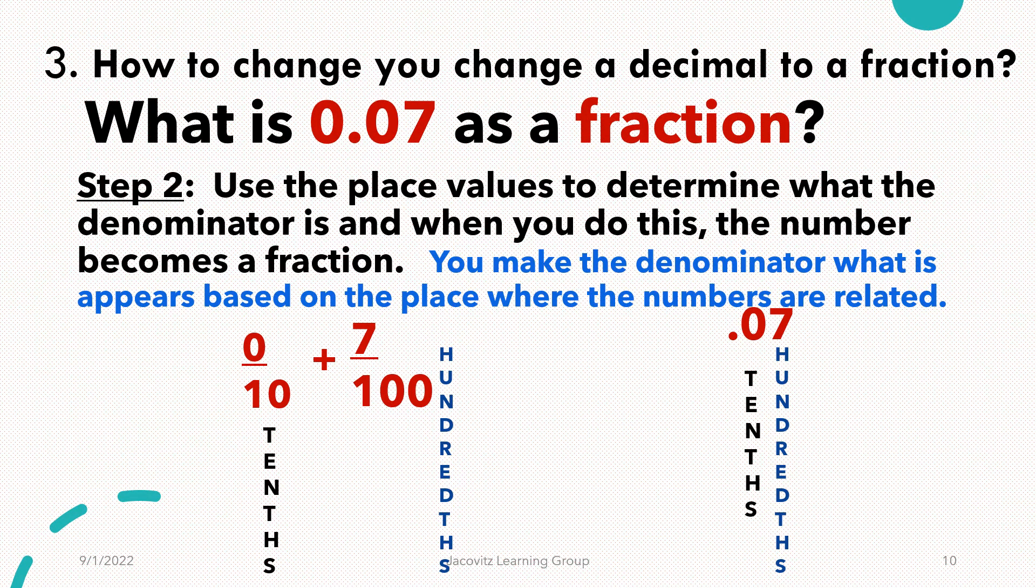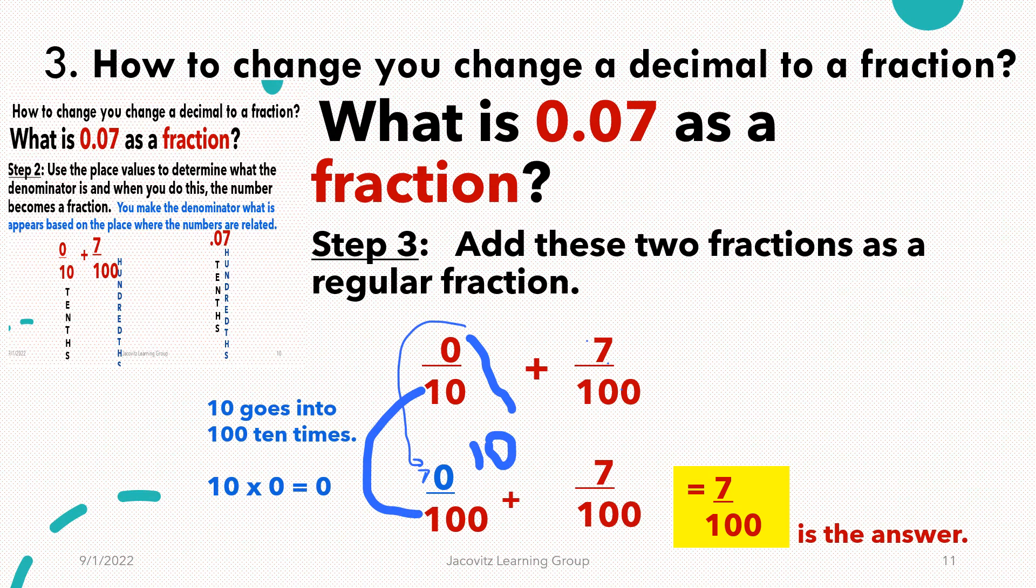You have zero when you get ready to convert. You take this tenths place and go zero over ten. Now, why are you doing tenths? Because you don't have a one until you get over here. We're dealing after the decimal. This is in the hundredths place for a reason, so therefore you have seven over a hundred. Now you have a setup here: zero over ten plus seven over a hundred. I know you're going to say, hey, wait a minute, you can't do that, that's already zero. That's okay, go ahead and do the math.